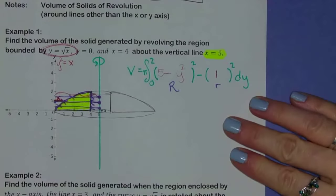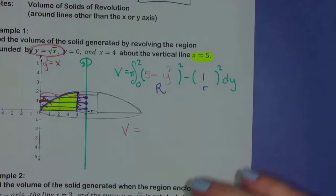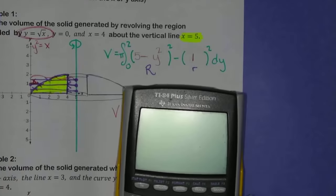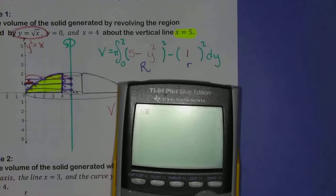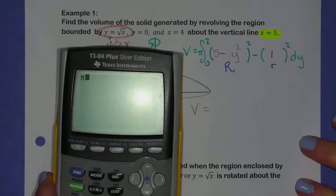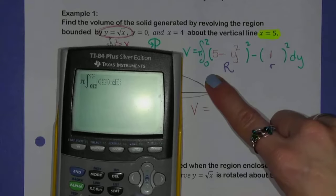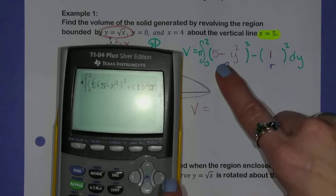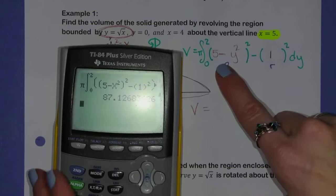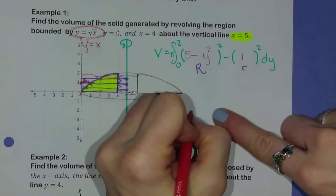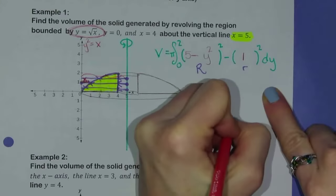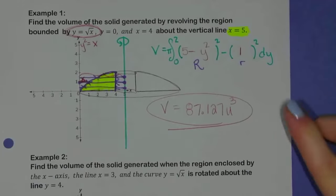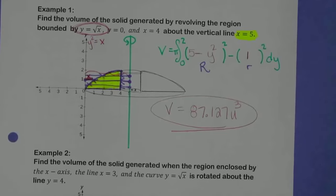That is my setup. When I throw that into the calculator — pi, math nine, from zero to two, open parenthesis, (five minus x squared) squared minus one squared — I'm getting 87.127. So the answer is 87.127 units cubed. It's a little bit different and takes some getting used to. That's why I have two more examples for us.